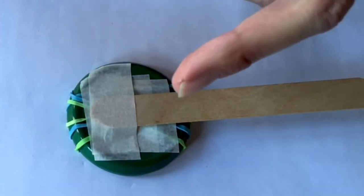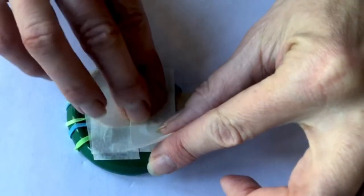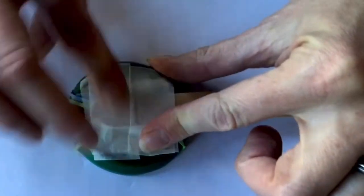The final step is to tape your lolly stick onto the back of the jam jar lid, making sure that your pattern side is at the front where the elastic bands are.